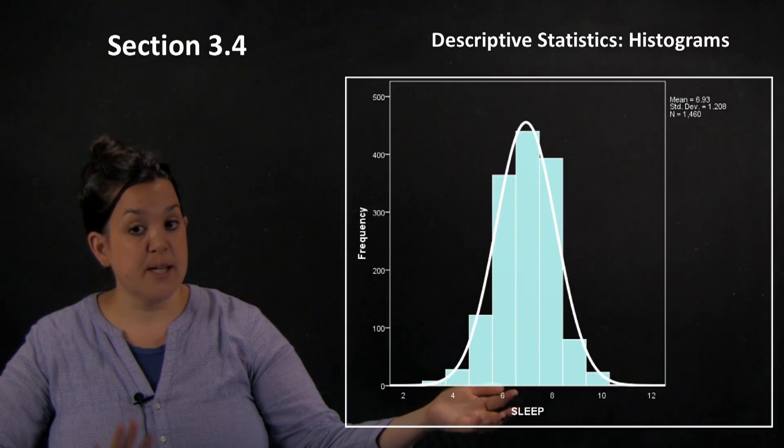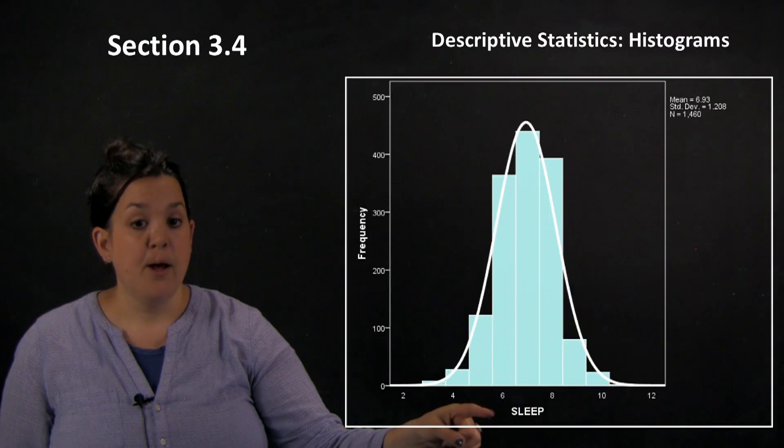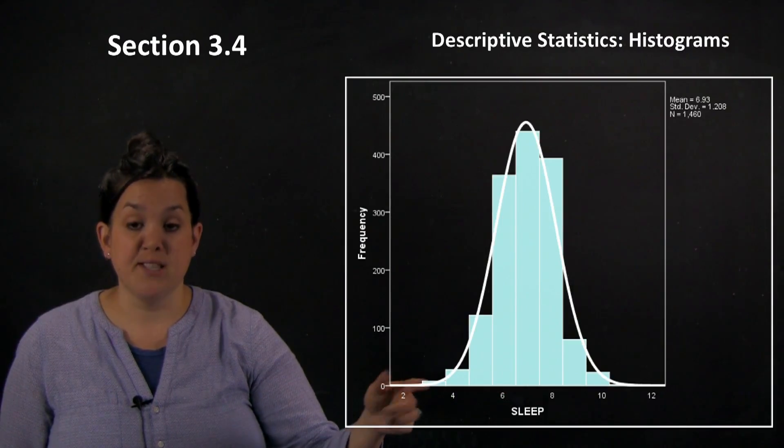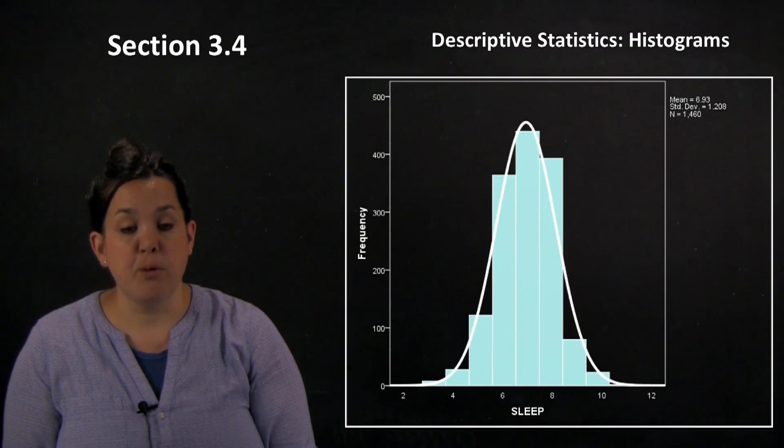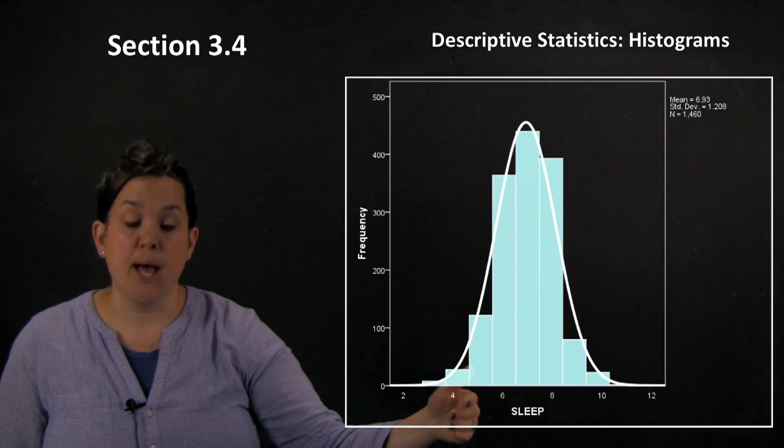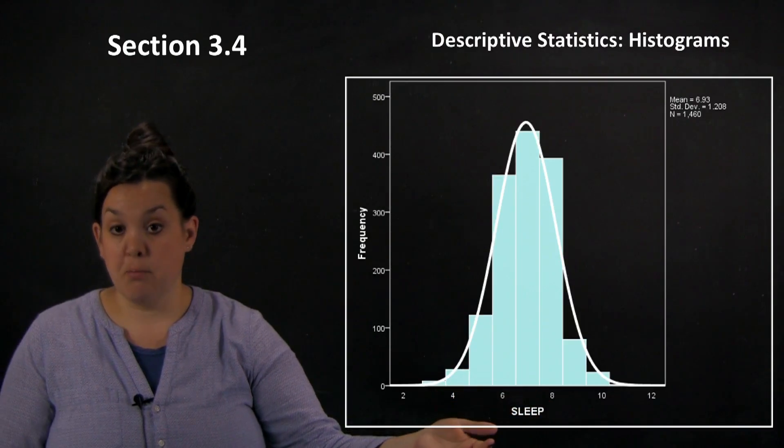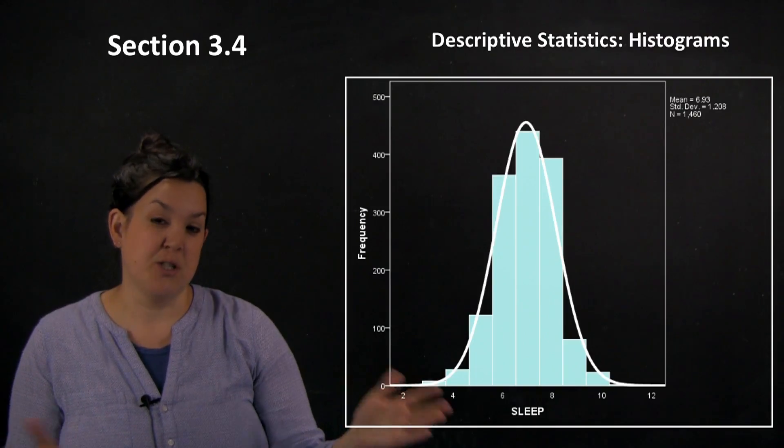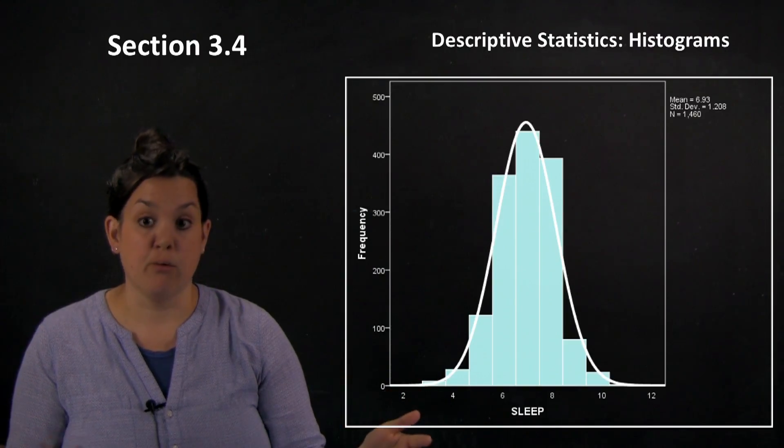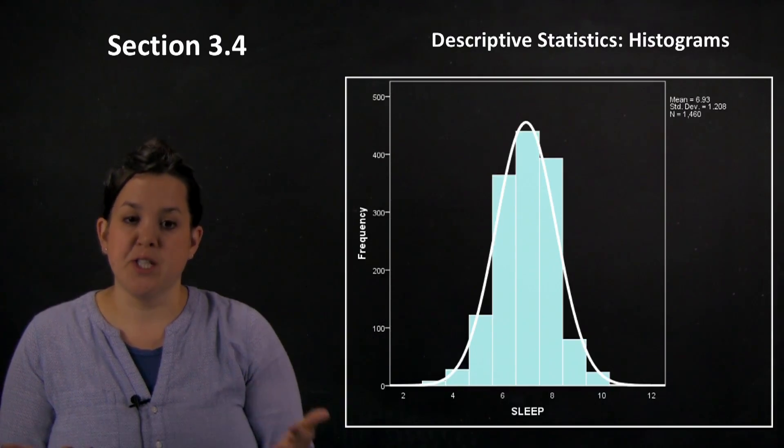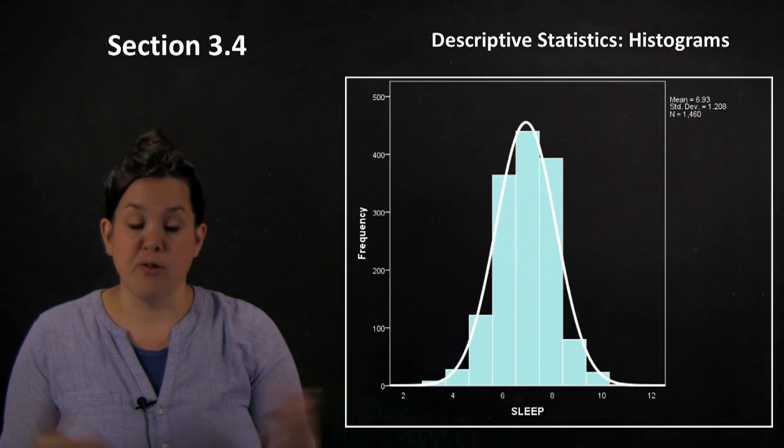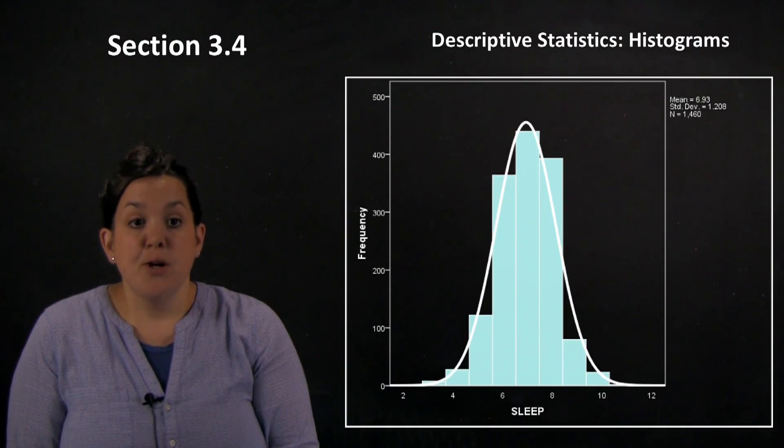Because the horizontal axis on a histogram is going to be essentially a number line, that's why the bars would touch. On a bar graph, because it's going to be a different category, like eye color—brown, green—the bars wouldn't touch because it doesn't make as much sense for green eyes to touch blue eyes. Whereas here, it makes sense for four hours of sleep to butt right up to five hours of sleep.